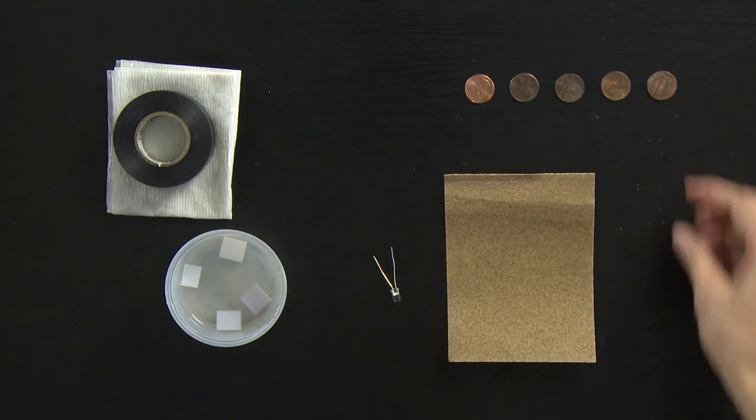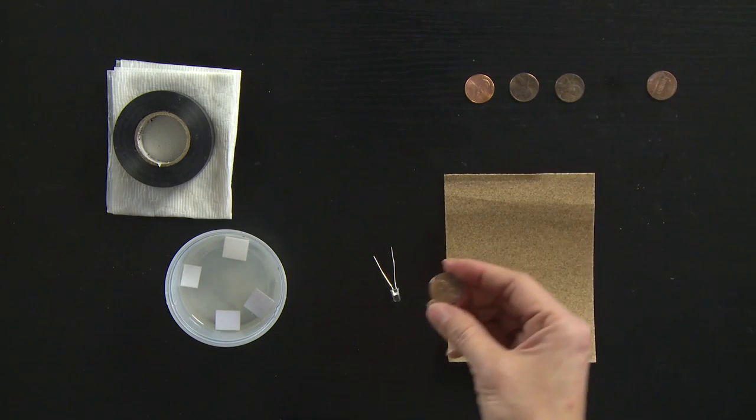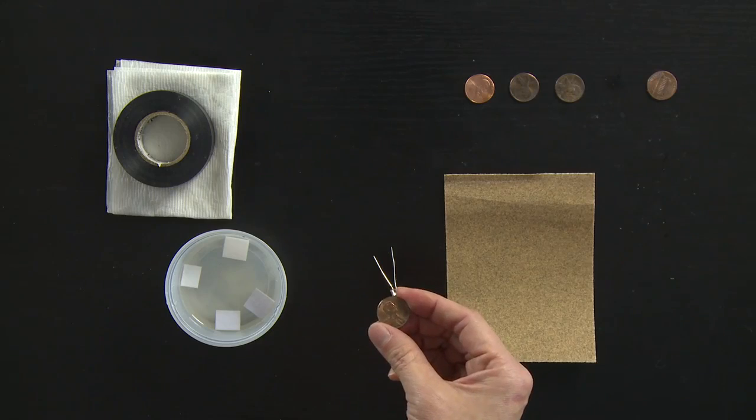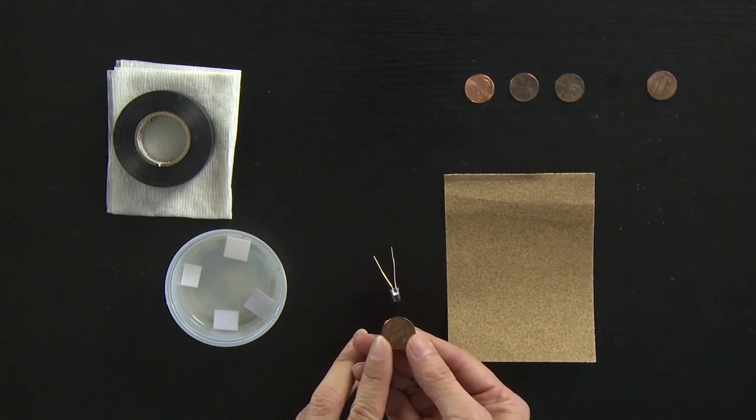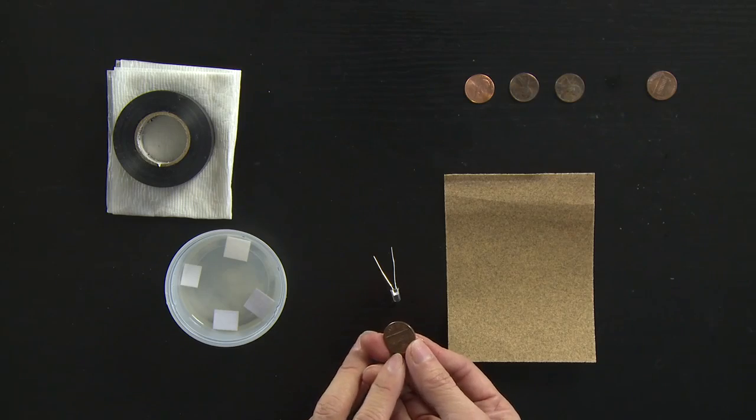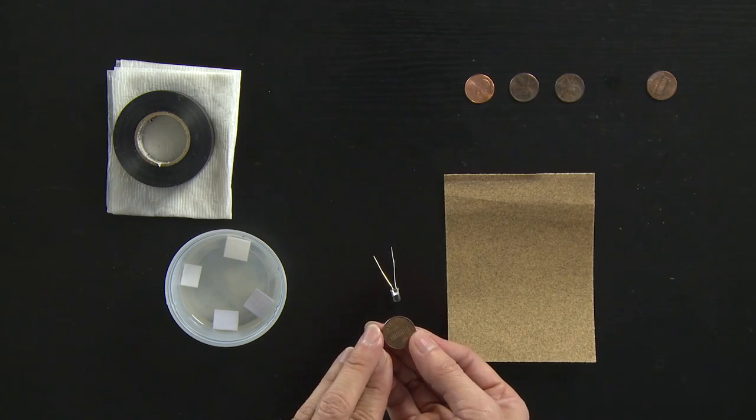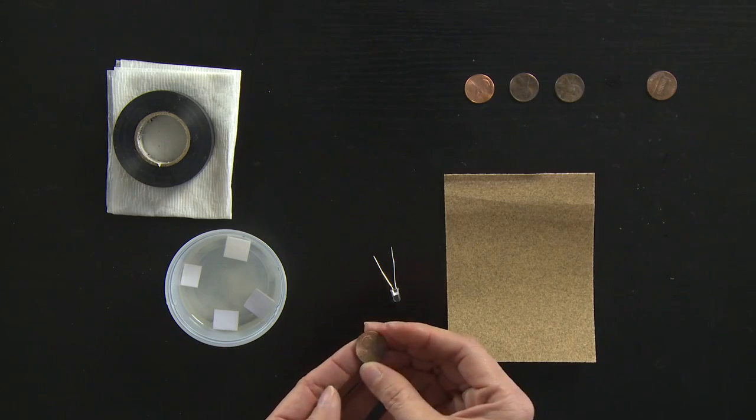The two different kinds of metal are going to come from pennies made after 1982. Before 1982 pennies were mostly copper, and after 1982 the mint changed the recipe so that the centers were made of zinc and there was only a copper coating on the outside.